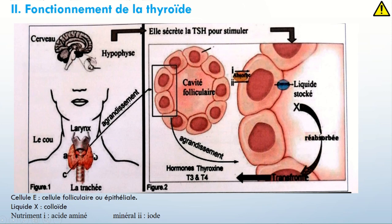Je vais voir que cette thyroïde est formée d'un ensemble de cellules folliculaires, de plusieurs follicules. Au milieu, vous avez une cavité folliculaire qui est remplie d'une substance gélatineuse nommée colloïde. Comme vous voyez, le terme est là. Et bien sûr, à retenir l'orthographe des termes scientifiques.